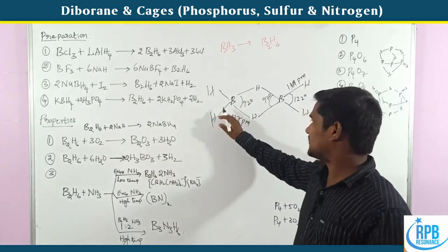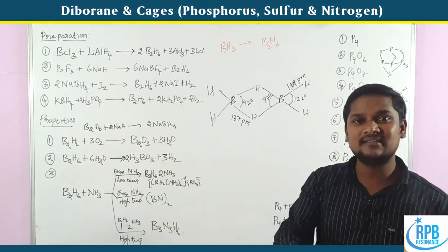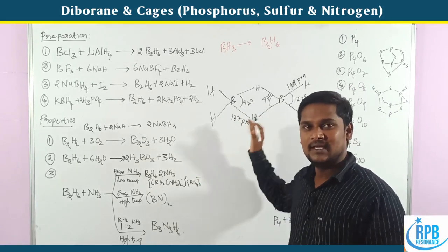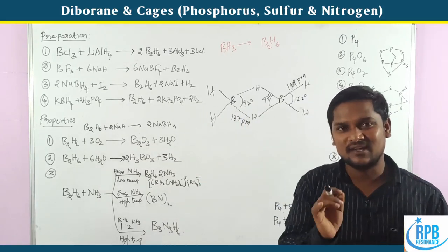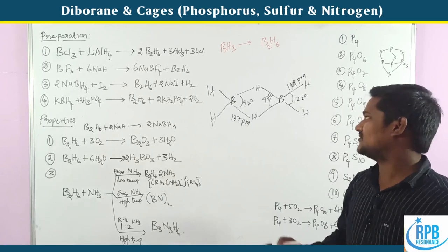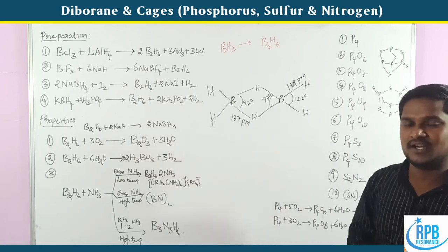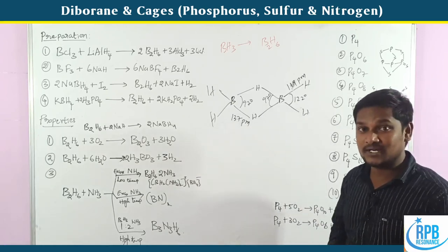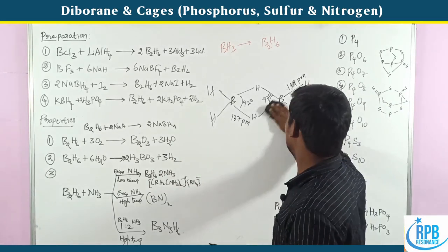The internal bond angle is 97°, the terminal bond angle is 122°, as seen in recent class 4 and 6 science exam questions. This is the structural information regarding diborane.